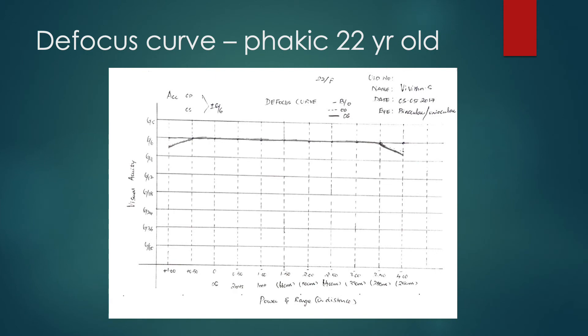This is the defocus curve of a 22 year old patient who was my optometrist. I generally use the phakic defocus curves to explain to the patient who has received presbyopic correcting IOLs, how his or her post-operative range of vision has improved, say compared to a 20 or 30 year old phakic emmetropic patient with no cataract. Sometimes with bilateral EDOF lenses with monovision adjustments or bilateral trifocal intraocular lens implantations, I have achieved a similar defocus curve in my 60 plus cataract patients also.